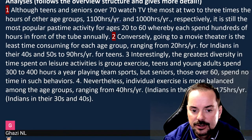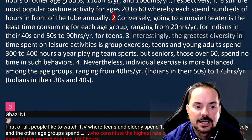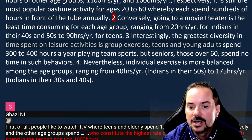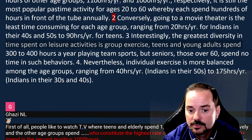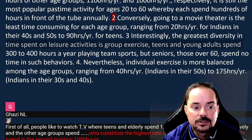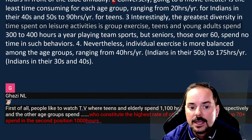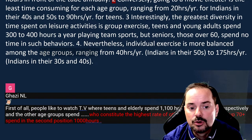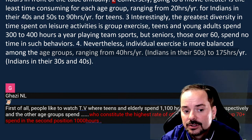Read together: 'Interestingly, the greatest diversity in time spent on leisure activities is group exercise. Teens and young adults spend 300 to 400 hours a year playing team sports, but seniors — those over 60 — spend no time in such behaviors. Nevertheless, individual exercise is more balanced among the age groups, ranging from 40 hours, Indians in their 50s, to 175 hours, Indians in their 30s to 40s.'